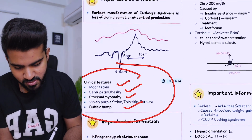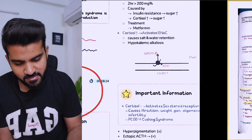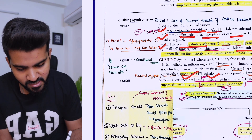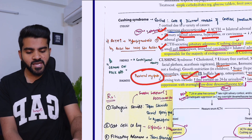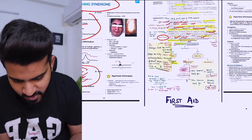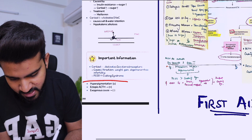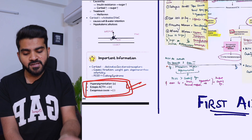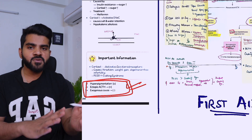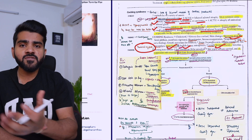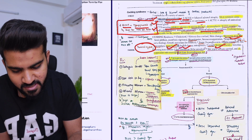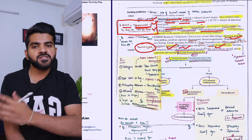Looking at clinical features — moon face, truncal obesity, buffalo hump, striae — these are present in First Aid. One thing that was not written was proximal myopathy. This is not mentioned in First Aid, but I have seen it in previous year questions, so I just wrote it here to make my notes complete. Another thing not written was hyperpigmentation — which cause of Cushing syndrome shows hyperpigmentation. Previous year FMGE asked many questions on this, so I wrote here: when ACTH is increased, hyperpigmentation will be present.